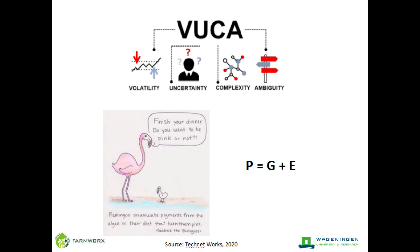It becomes even more complex in the farming world. I also want to draw your attention to a unique formula: P is equal to G plus E. Many PhD students and researchers can easily resonate with this. Phenotype is a combination of genetics and environment. So if we can understand the environment and the factors that have contributed to genetic development, we may have a say in the phenotype.